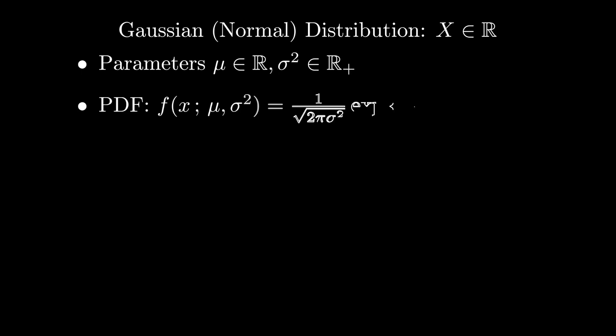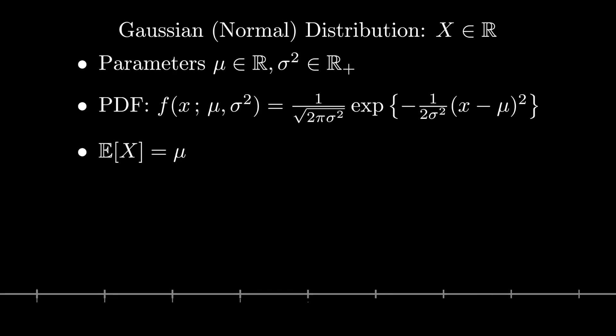When our random numbers can take values on the real line, our workhorse distribution is the Gaussian or normal distribution. It's difficult to overstate how important the Gaussian distribution is to all kinds of fields from physics to econometrics. Part of the reason it's so fundamental is due to the central limit theorem.